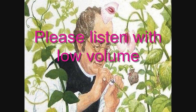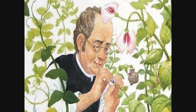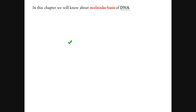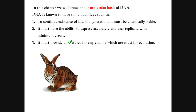In an earlier chapter we studied about the pattern of inheritance explained by Gregor Mendel. In this chapter we are going to learn about the molecular basis of genes. DNA has some qualities: it can help in continuity of the existence of life, so DNA must be chemically stable so that it can be easily passed on from one generation to another. Second, it must also have the ability to express its characteristics.